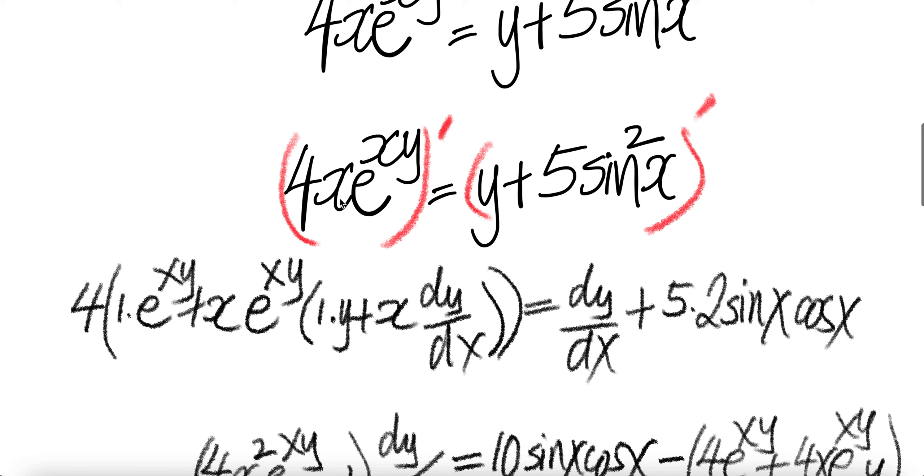The derivative of this is 1 times the second function, plus the first function times the derivative of the second function. The derivative of the second function will be e to the xy times the derivative of that, which is a product of two functions. The derivative of xy is 1 times y plus x times dy/dx.